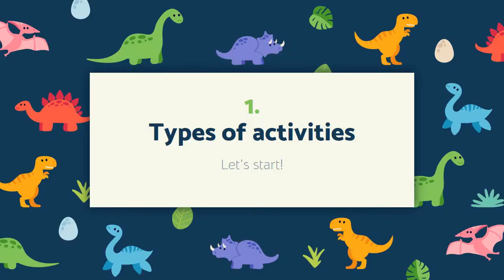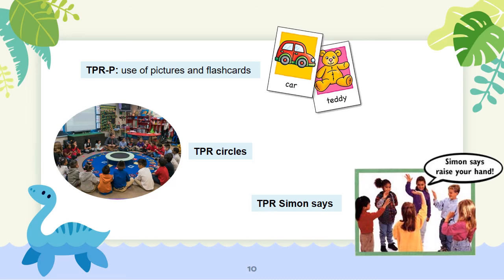Now the types of activities. The first is TPR-P, in which teachers can use pictures and flashcards. The second is TPR Circles, which organizes students in a circle around the teacher — the teacher says the word and the last person to do the action is out. Finally, TPR Simon Says.